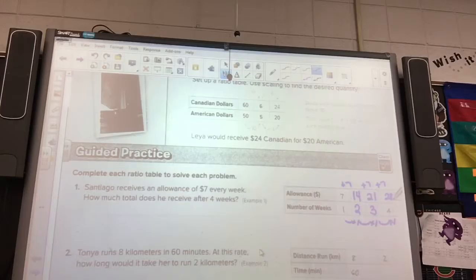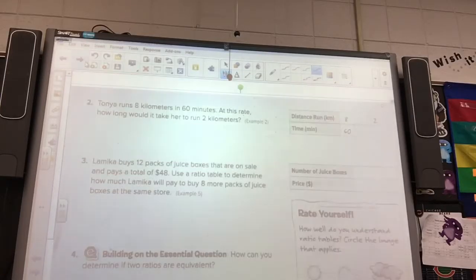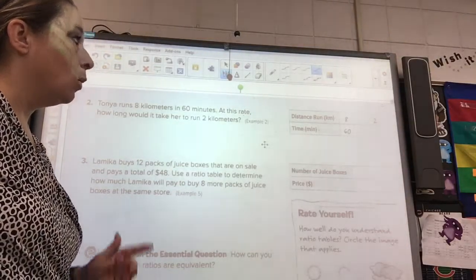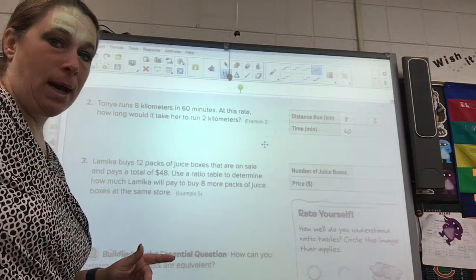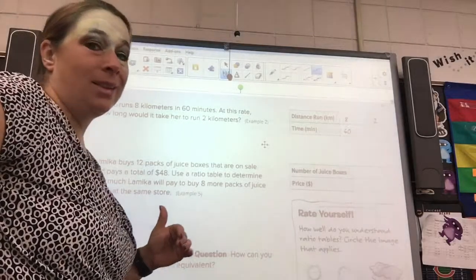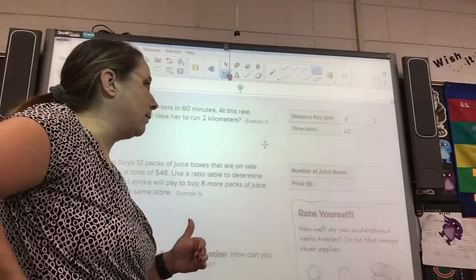All right, let's look at Tanya. Tanya runs 8 kilometers in 60 minutes. At this rate, how long would it take her to run 2 kilometers? So, now they gave us an 8, a blank space, and a 2. So, how are we going to get from 8 to 2 in two steps? What can we divide 8 and 60 by? We've got to go down, because going up isn't going to really help us. So, if we scaled down, what could we divide by both those numbers?